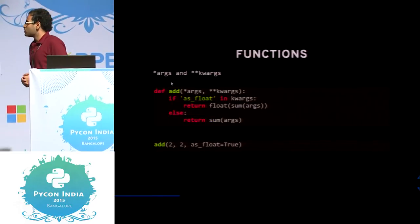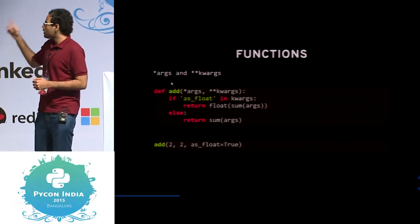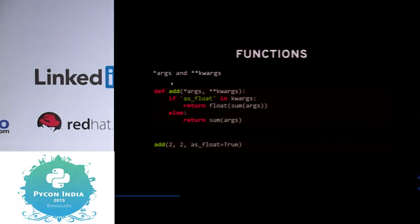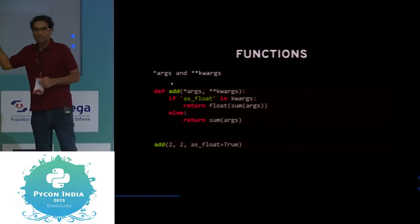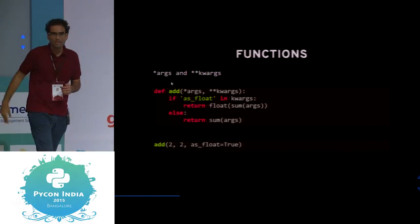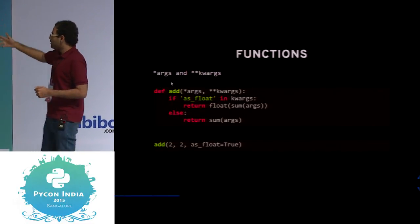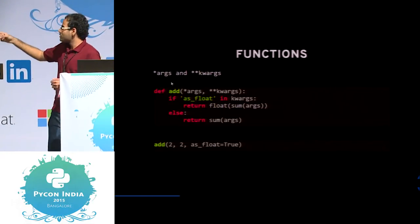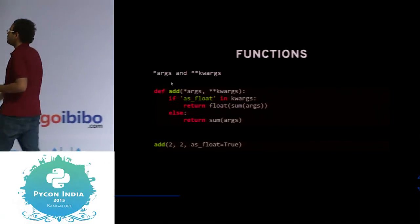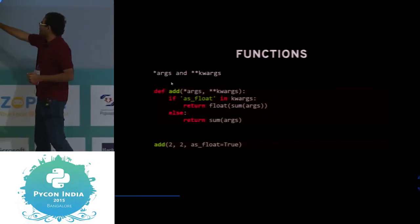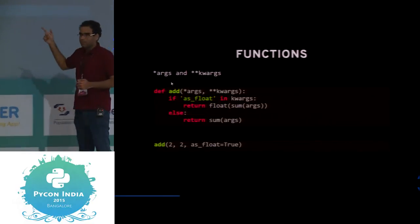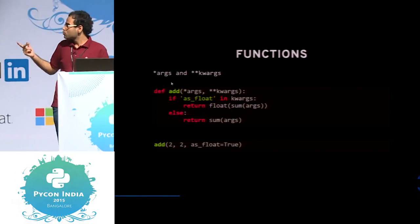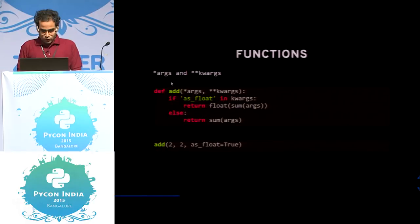Keyword args and args — for those of you who aren't aware, functions accept args, *args, and **kwargs. When you have add(2, 2, as_float=2), as_float is taken as the keyword arg and 2, 2 are taken as the args. For that same function add, if you pass as_float=True, it's going to return a float. It checks if as_float is in the keyword args dictionary. It's going to return a float of sum. args is a list, so I can just do sum(args) and it returns me a sum.